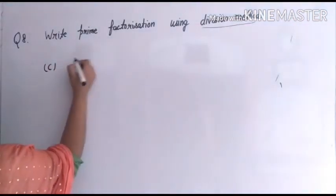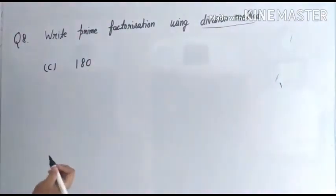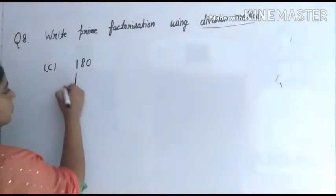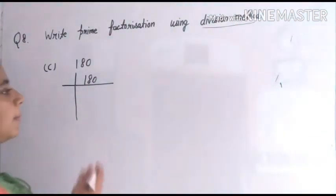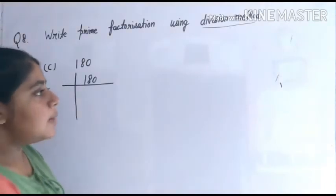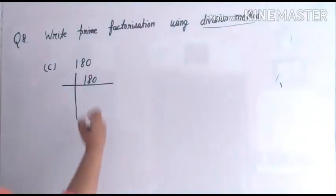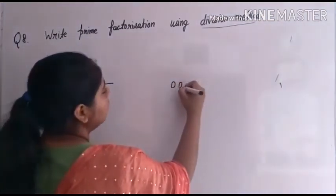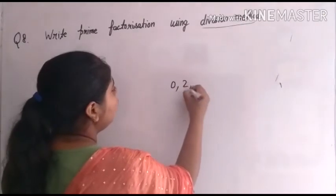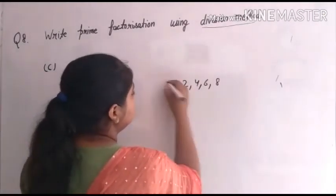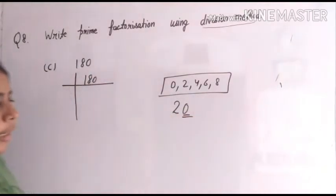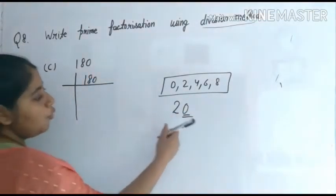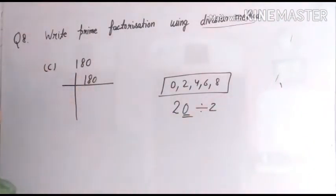Now, children, let's do 180. Divisibility will help you a lot here. Divisibility tells us which number will exactly divide it. The divisibility rule: if zero, two, four, six, or eight appears at the end of any number — that is, the end digit — then that number is exactly divisible by two.